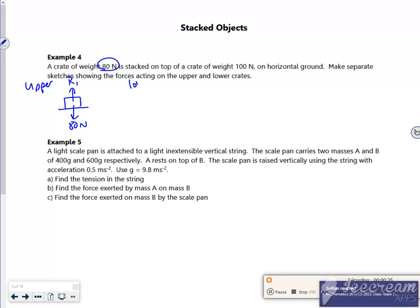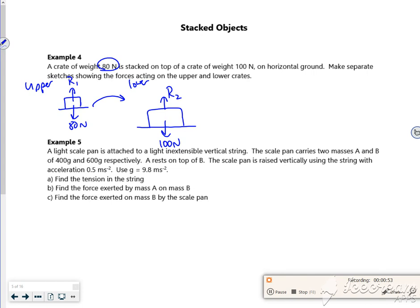Right, so now if I think about the lower one, the one on the bottom there, it's got a weight of 100 newtons. It's got its own weight of 100 newtons and it's got a force pushing back, but also you've got to take into account this idea that this crate is on top of it.